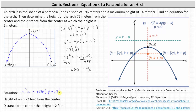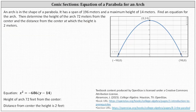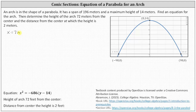Now that we have the equation of the arch, we can answer the two questions: determine the height of the arch 72 meters from the center, and determine the distance from the center at which the height is two meters. To find the height 72 meters from center, we let x = 72 and substitute into our equation.